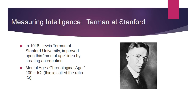In 1916, Lewis Terman at Stanford University improved upon this mental age idea by creating an equation: mental age divided by chronological age, multiplied by 100, equals IQ. This is called the ratio IQ, and it became known as the Stanford-Binet IQ. For years, this was the standard.